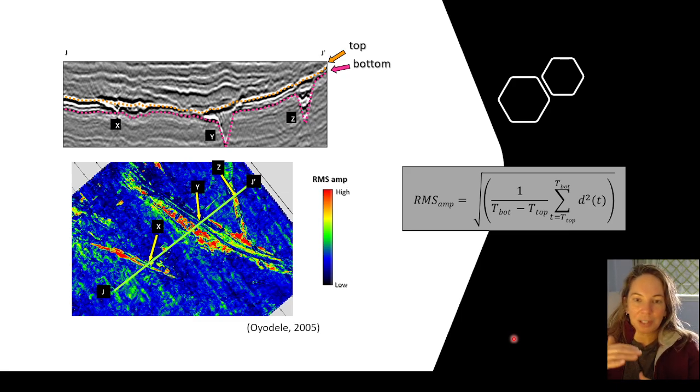But so you take a window of samples and then you square the value in that window, find their average and take the square root. So root mean squared amplitude.